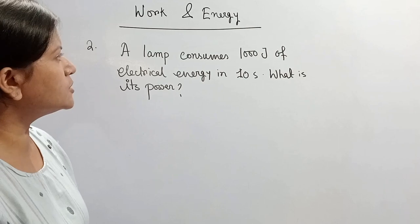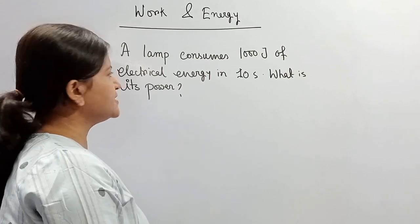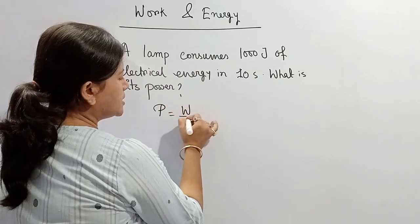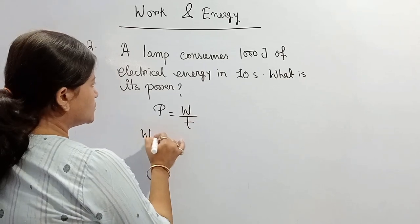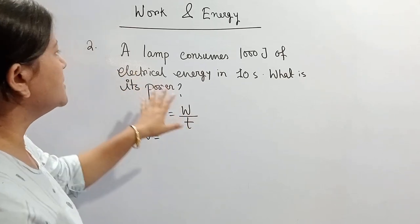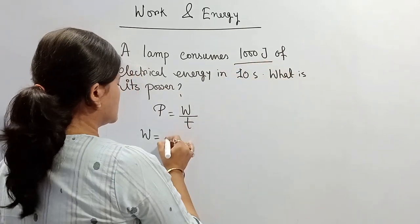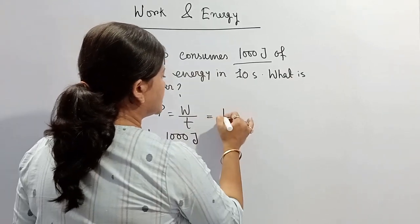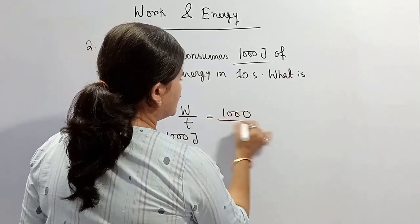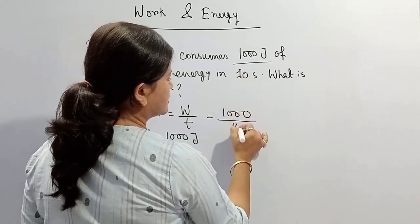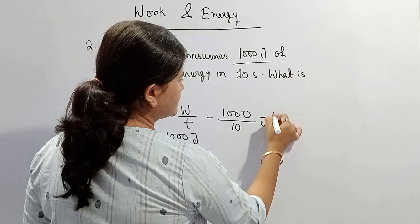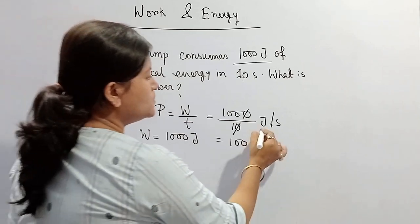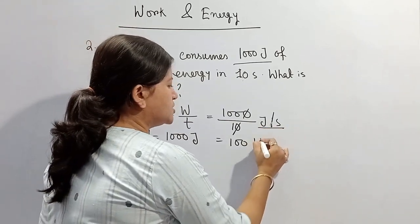Question number 2: A lamp consumes 1000 J of electrical energy in 10 seconds. What is its power? We know that power equals work done divided by time. Work done equals energy consumed by the lamp, that is 1000 J. So power equals 1000 divided by 10 seconds, which is 100 joules per second. And joule per second is called watt, denoted by W.